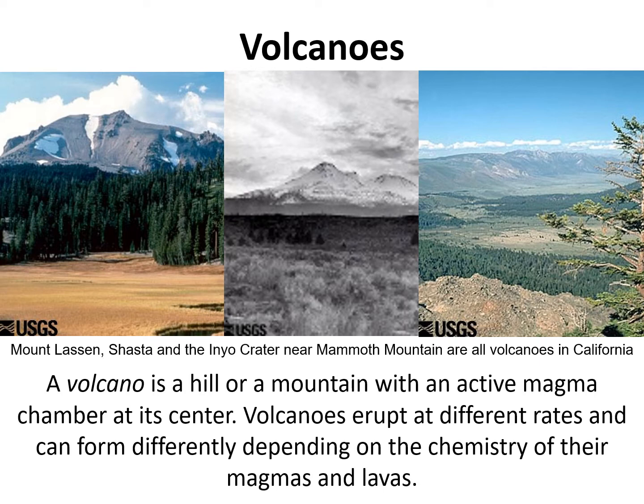Volcanoes that have an active magma chamber — where the magma is molten, superheated, and constantly moving — are classified as active and are more likely to erupt at any time. They usually have some timing with eruptions, but as with any major tectonic event, it's not necessarily guaranteed, so we can't really predict with any certainty when a volcanic eruption will take place.